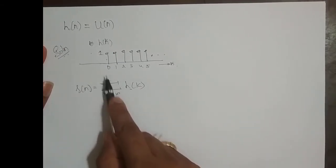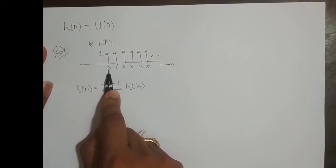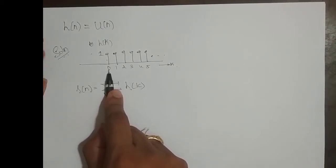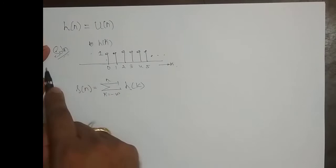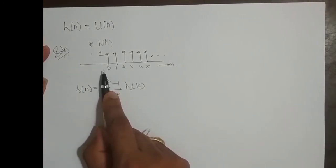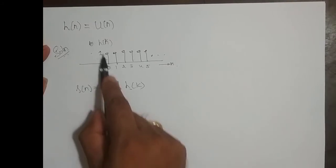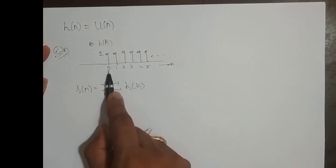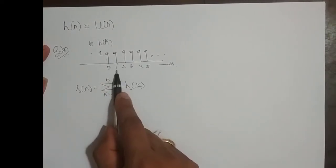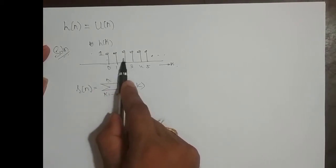So if I give n the value 0, what is the step response? It is 1. It is nothing but a running sum. If I put n here, it is nothing but the sum of all samples from minus infinity till 0. From minus infinity till minus 1 it is 0, so the sum of all those samples is 0, whereas at n equal to 0 its sample is 1, so the result is 1. When I set n to 1, the step response is 1 plus 1, which is 2.